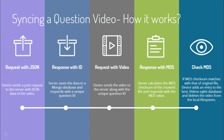The synchronization of video with the server works as follows. First, the device sends a request with a JSON file containing the video data. The server stores this information into a MongoDB database and responds with a unique question ID. Then the device sends the video along with this question ID to the server. The server calculates the MD5 checksum of the received file and responds back to the device.